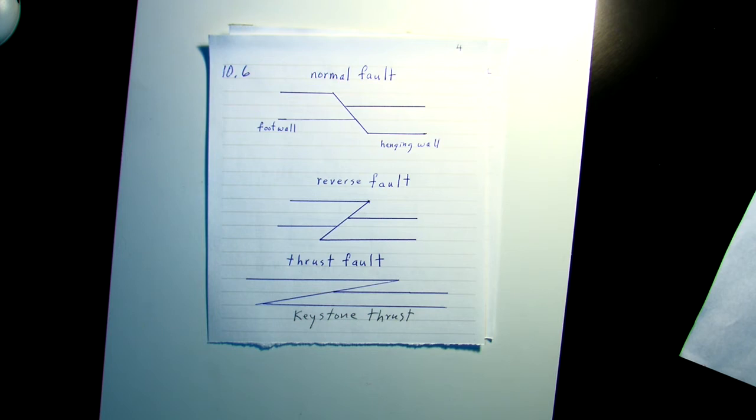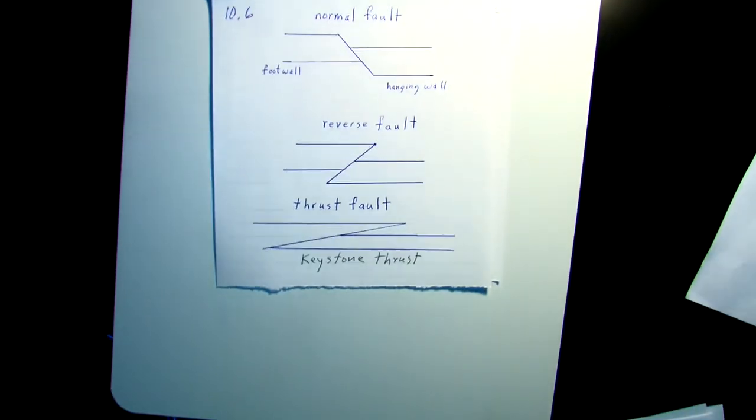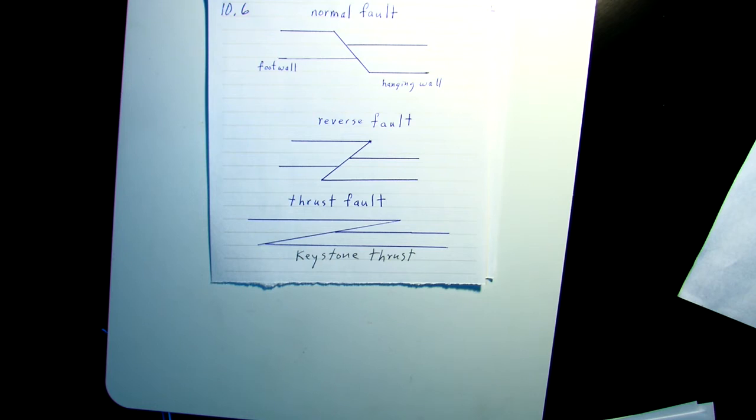In a reverse fault, the rock strata are put under compression. Remember, compression also causes folds. But if the layers don't bend, they will break. The rock layers are shortened, thickened, and there are repeated layers.